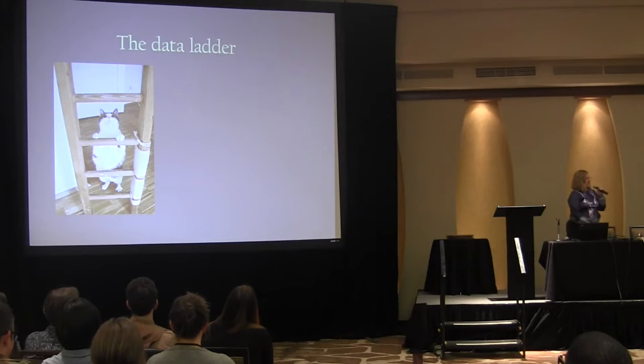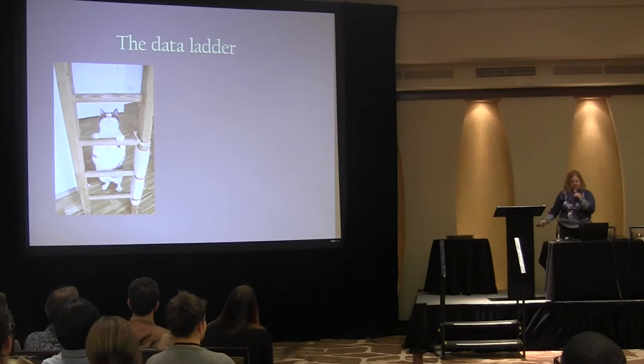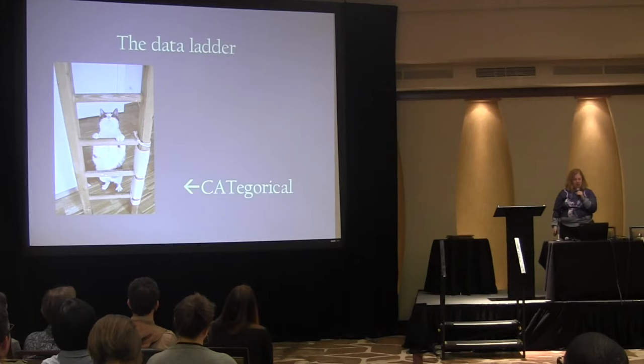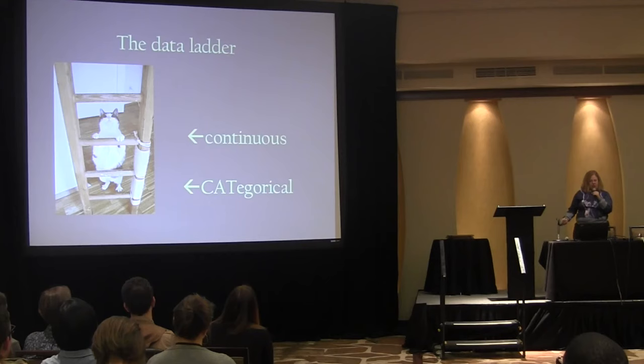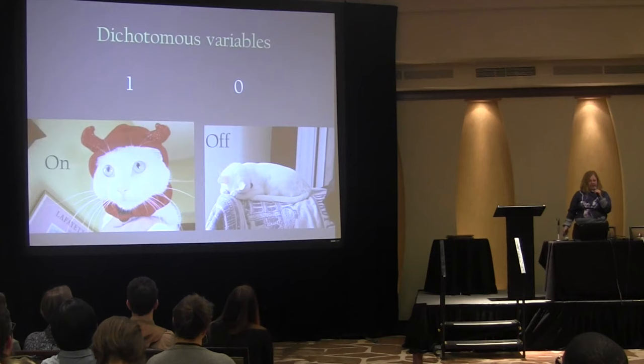Let's go back to one of the early concepts we always use to teach statistics: the data ladder. At the very bottom of the data ladder we have categorical data, and as you move up the ladder it becomes continuous. We're going to start at the very bottom with the most simple categorical data: dichotomous variables.